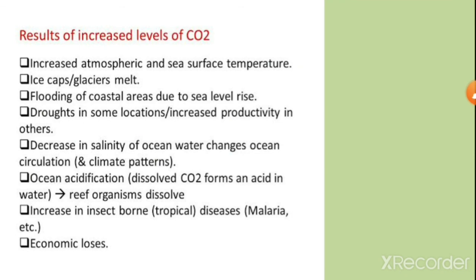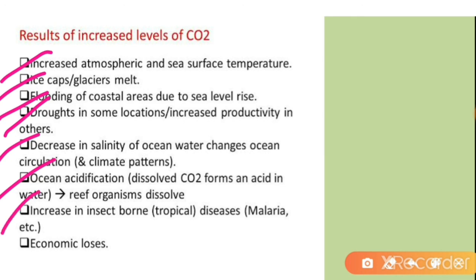Results of increased levels of CO2: increased atmospheric and sea surface temperature, ice caps and glaciers melt, flooding of coastal areas due to sea level rise, droughts in some locations or increased productivity in others, decrease in salinity of ocean water changes ocean circulation, ocean acidification, reef organisms dissolve, increase in insect borne diseases, and economic losses. That's why there is a need to decrease CO2 from the atmosphere.